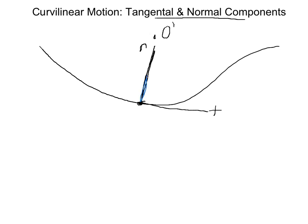We have our unit vector u sub n in the normal direction and our unit vector u sub t in the tangential direction. So u sub t is the unit vector tangent to the path of the particle, and u sub n is the unit vector normal to the path of the particle.